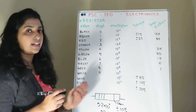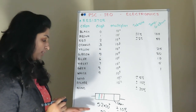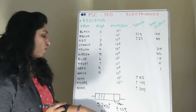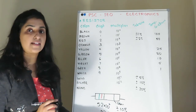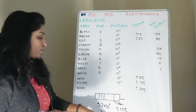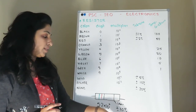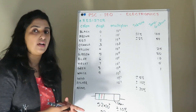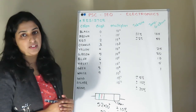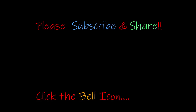So the resistor value is 52 ohms with plus or minus 10% tolerance. If you want to see the next topic, please see the next video. Bye-bye!